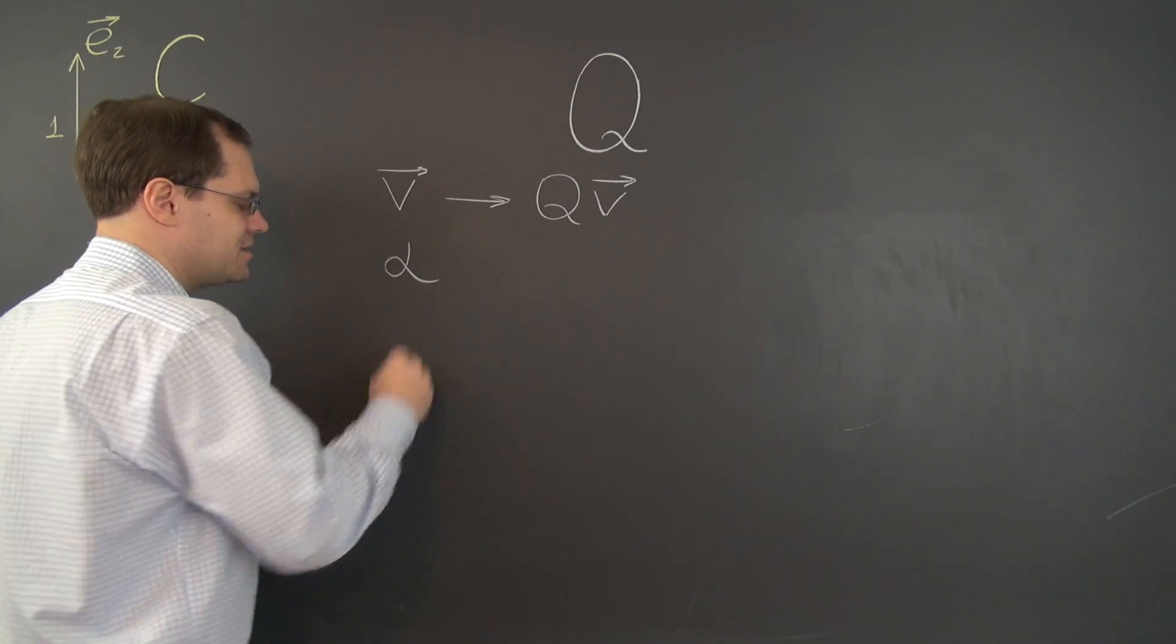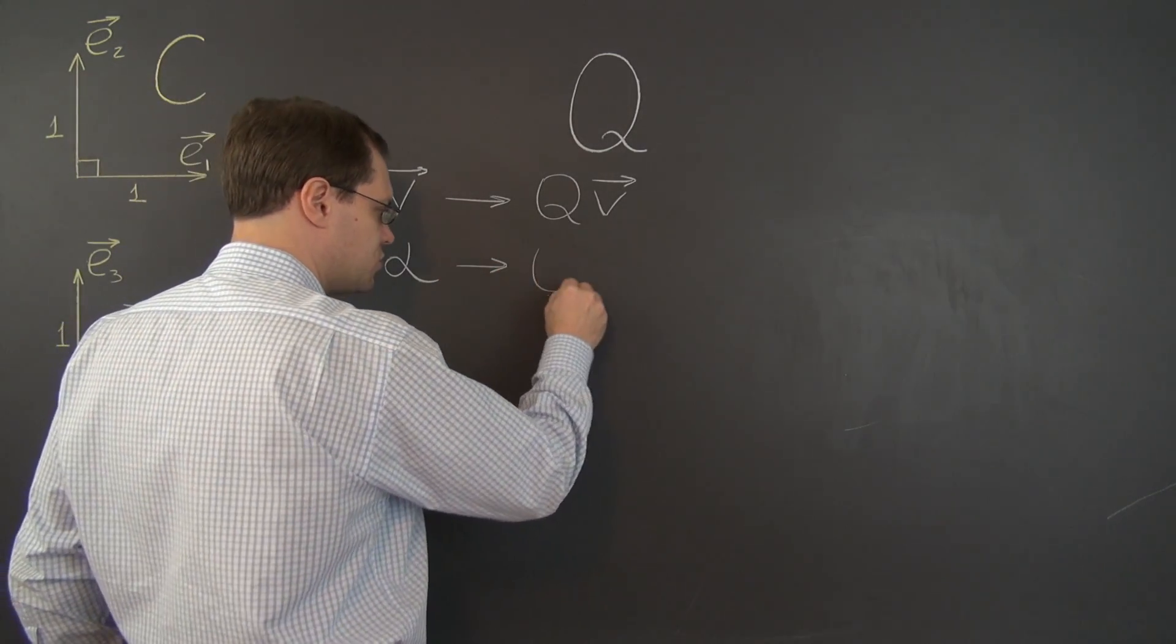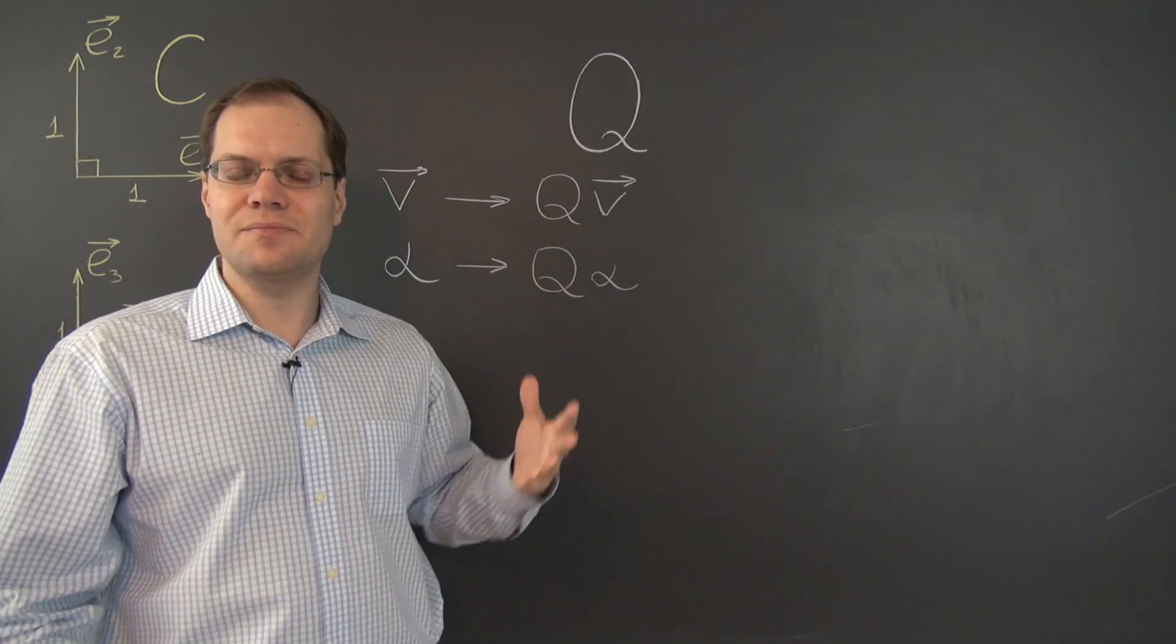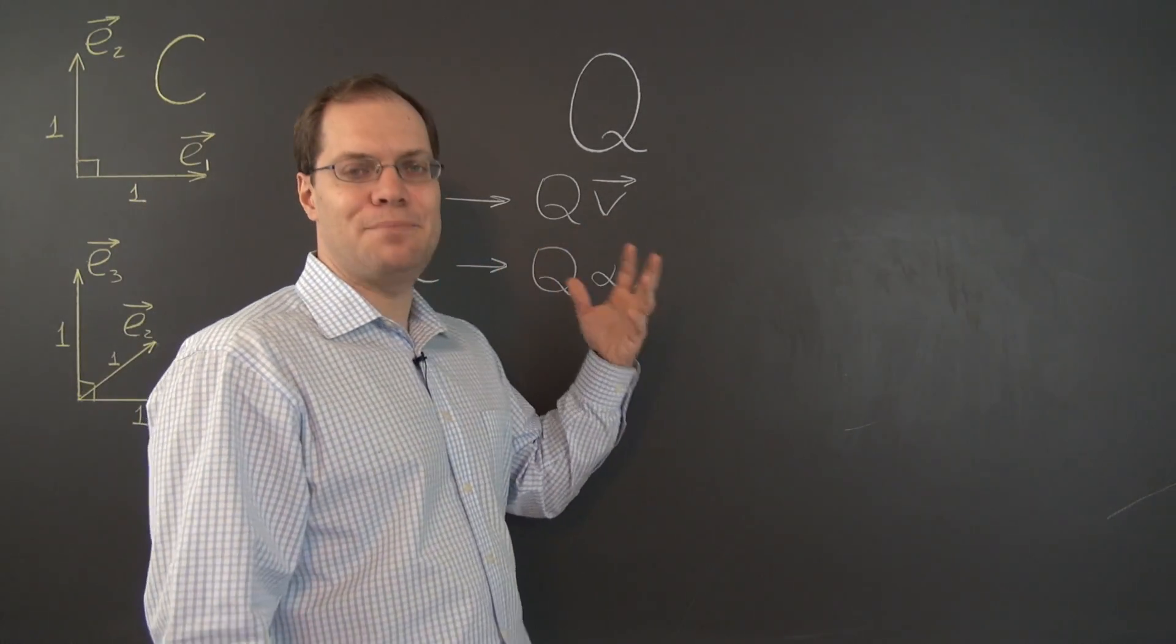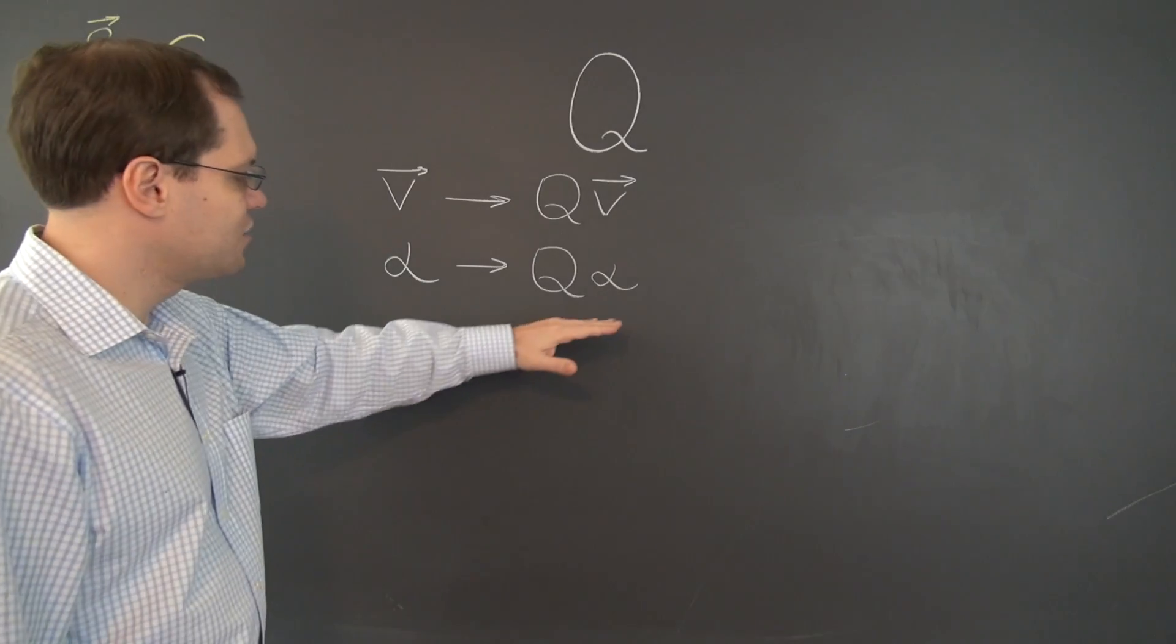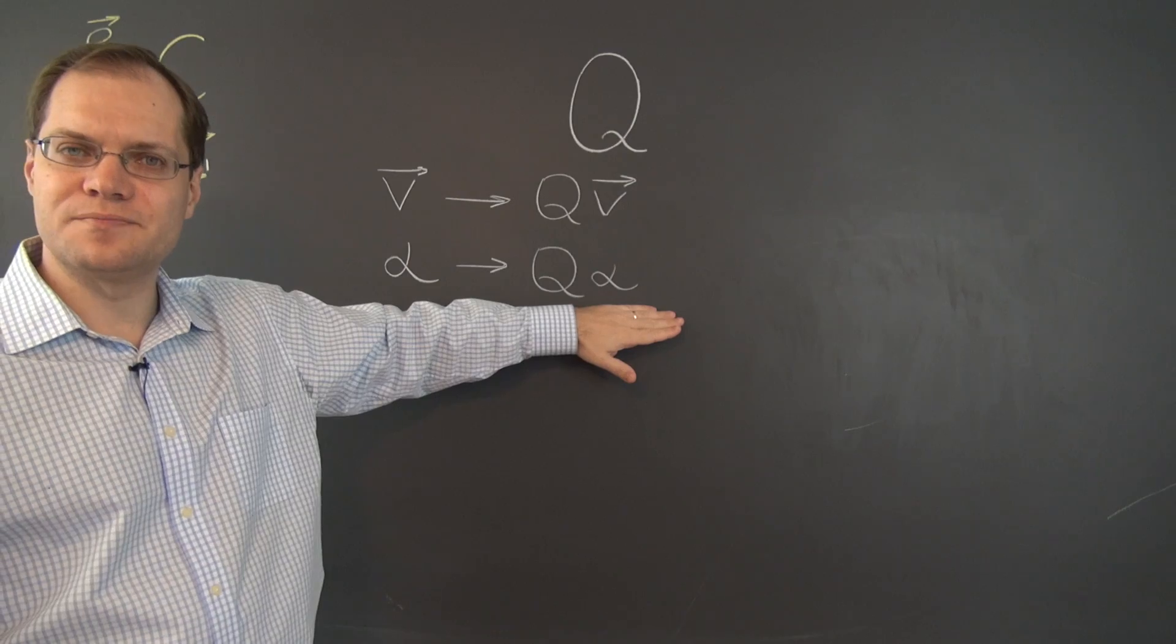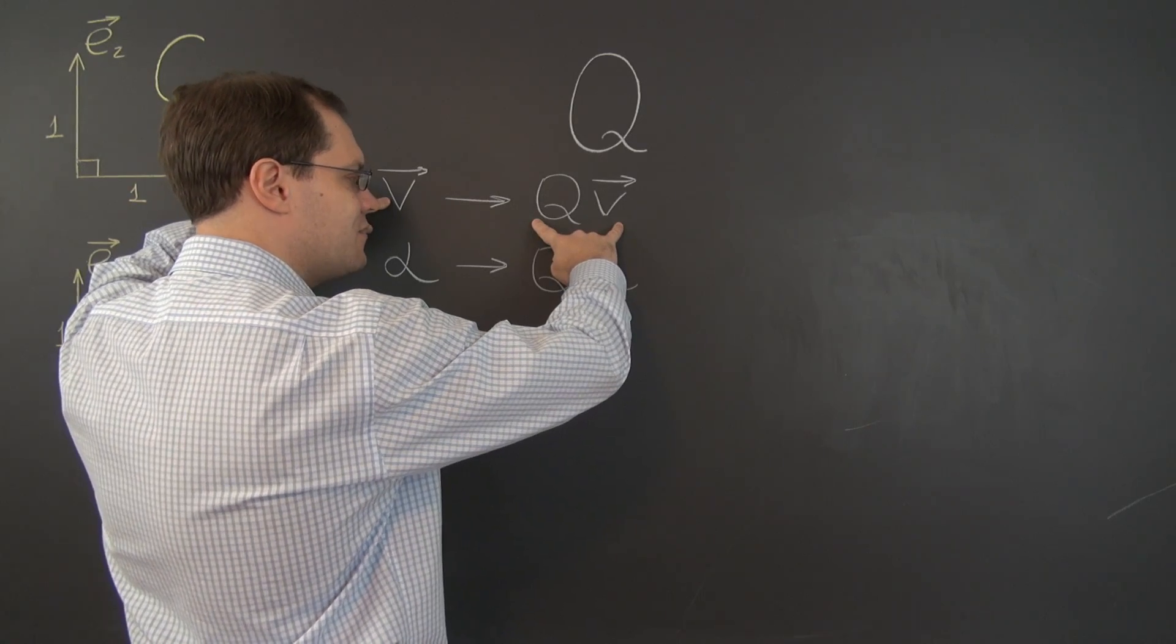So here is what happens in the component space. The vector V is represented by alpha, alpha is a member of R2, it's a pair of numbers. And alpha goes to the matrix Q times alpha. You've noticed how here I say Q of V because it's not multiplication, it's applying the linear transformation Q to the vector V. But linear transformation application in component spaces is multiplication. It used to be the vector alpha in R2, now it becomes the vector Q alpha. And the lengths are the same.